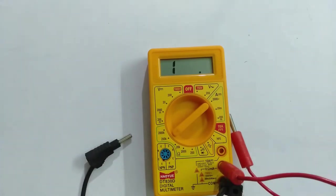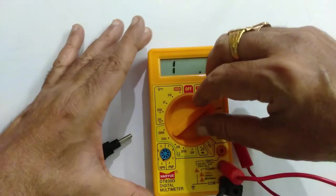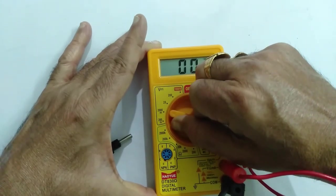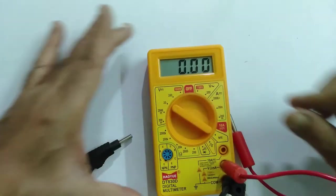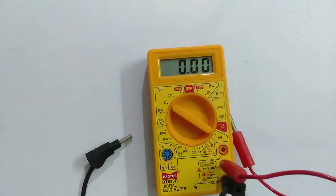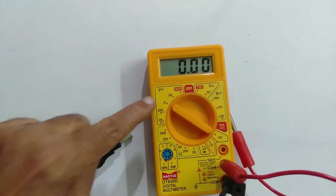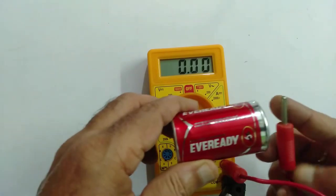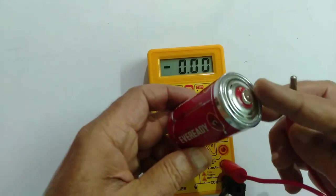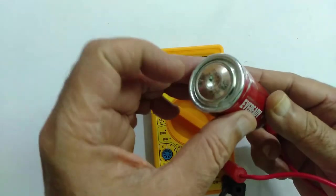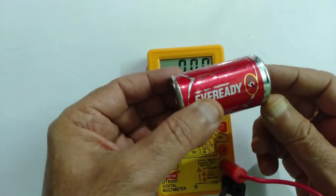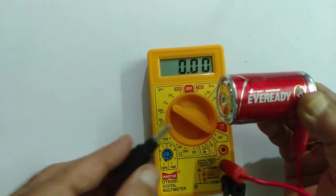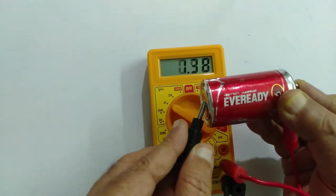Now, I want to measure the potential difference. The potential difference of the cell is of the order of 1.5 volts, so I have to select the 20 volt range. I'll have to keep this at the positive. This is called positive terminal and this is negative terminal. So, I have to keep in contact the red probe with the positive and black with negative.